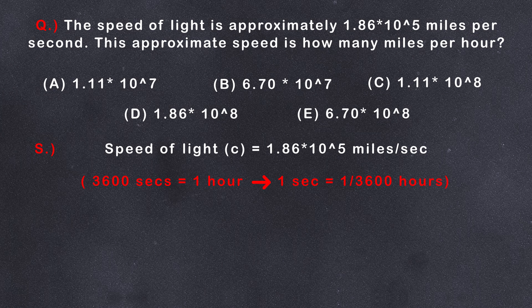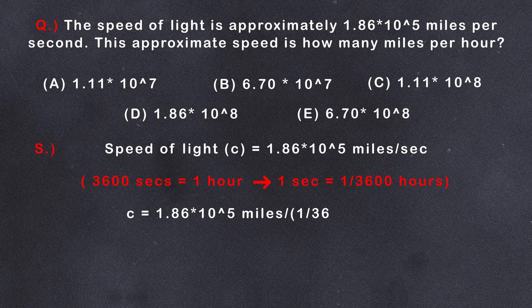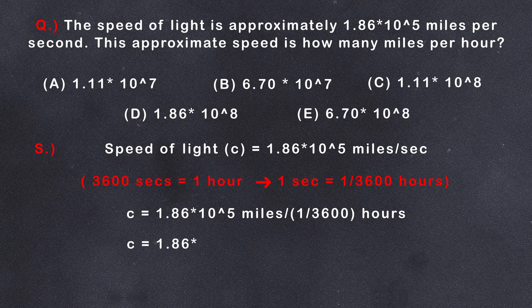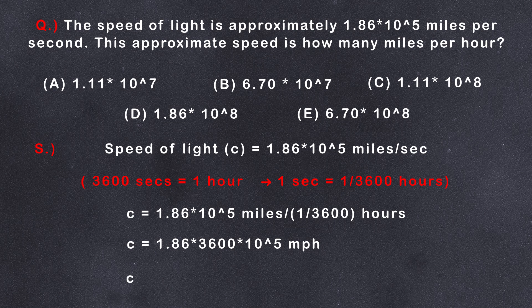So we can write the speed of light as 1.86 × 10^5 miles divided by 1/3,600 hours or 1.86 × 3,600 × 10^5 or 6.7 × 10^8. Hence, E is the correct answer.